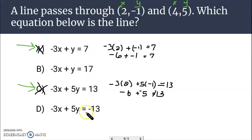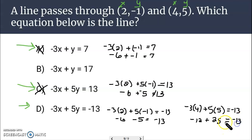Alright. Let's try D. Negative 3 times 2 plus 5 times -1 equals -13. Is that true? Okay. We have a negative 6 and a negative 5. Yes, that equals negative 13. Now it has to work for the other point as well. Alright. Let's try the other point. Negative 3 times 4 this time, plus 5 times 5. Does that equal negative 13? Negative 3 times 4 is negative 12. 5 times 5 is 25. Ah, that's going to equal positive 13. This is not true.